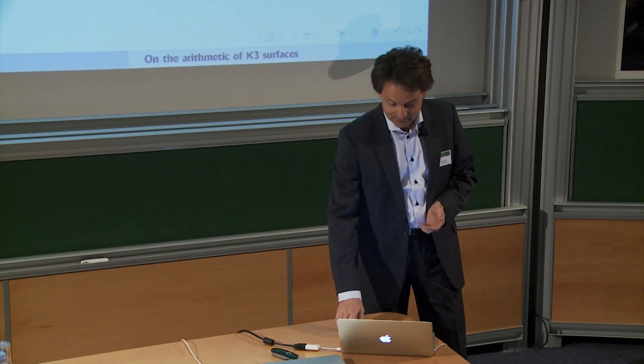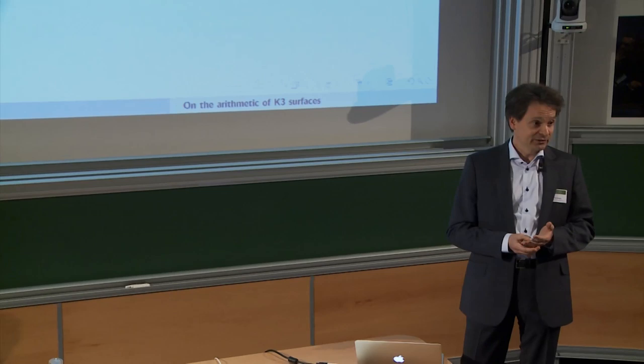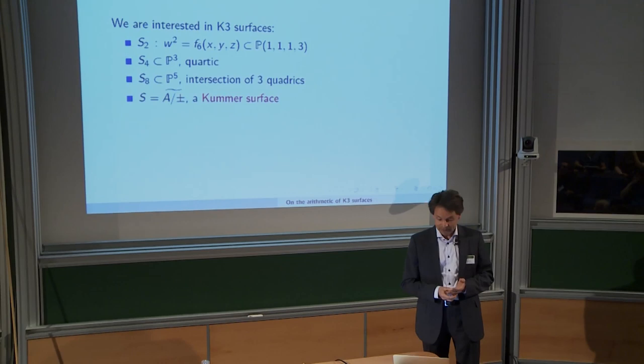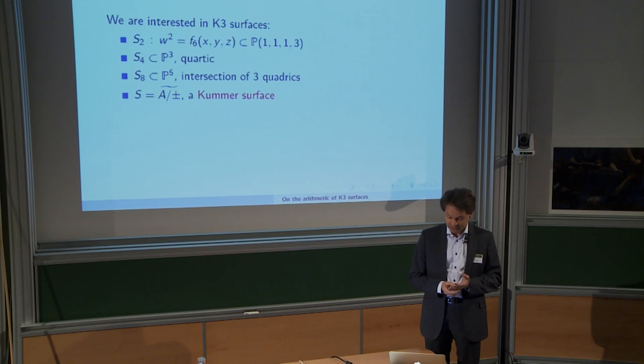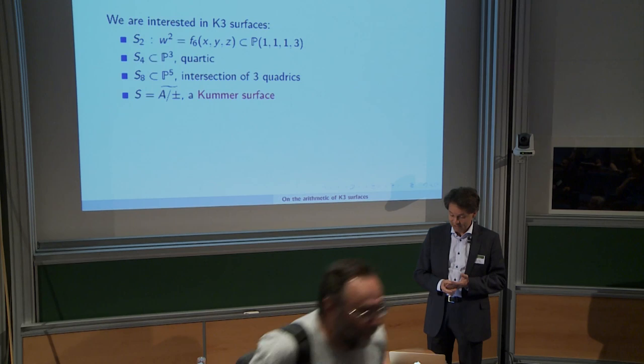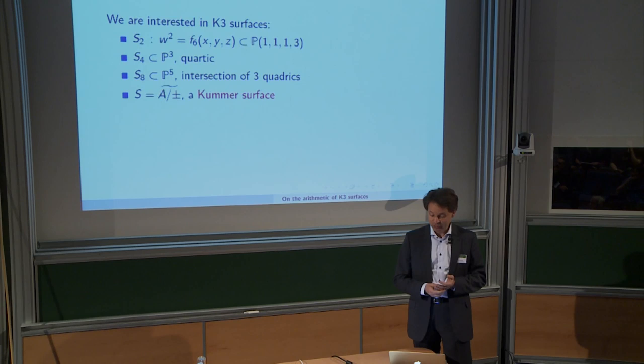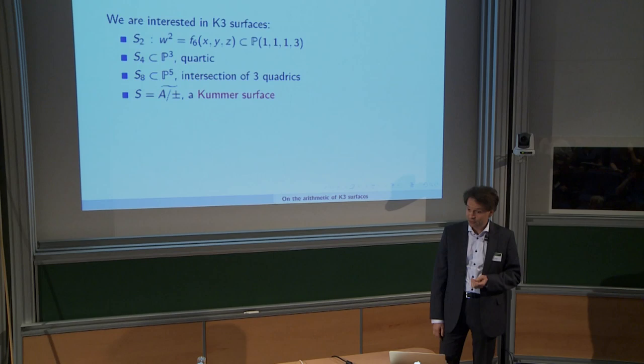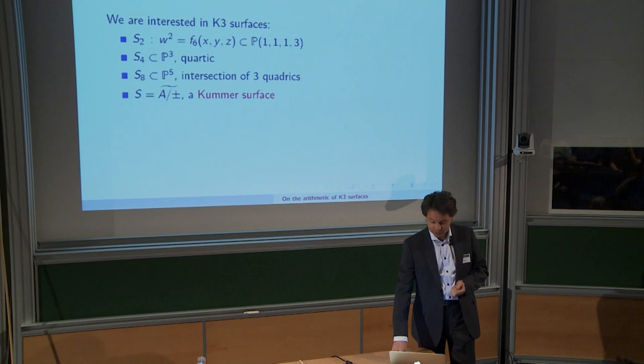We're talking about K3 surfaces — algebraic K3 surfaces given by algebraic equations and labeled by even positive integers for degree. Degree 2 K3s are double covers of P2 ramified in a sextic; degree 4 are quartics in P3, the most famous perhaps. There are also intersections of three quadrics, or a Kummer surface — the blowup of fixed points on the surface when you quotient by the involution x goes to minus x.